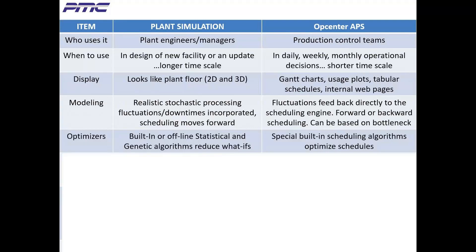PlantSim includes a genetic algorithms optimizer that can slash the time required to cover all what-if possibilities, like experimenting with the scheduling of parts. Unlike PlantSim, which requires time to run simulations for the various scheduling options, OpCenter APS uses specialized fast algorithms to optimize schedules.